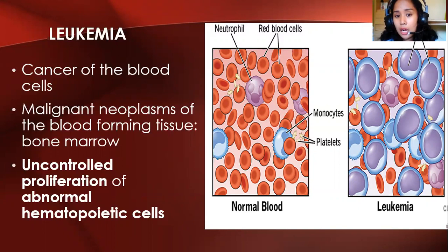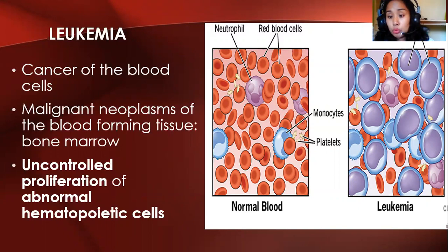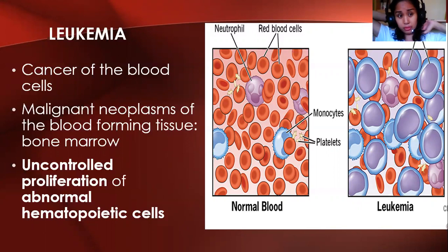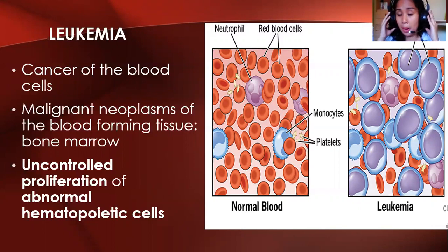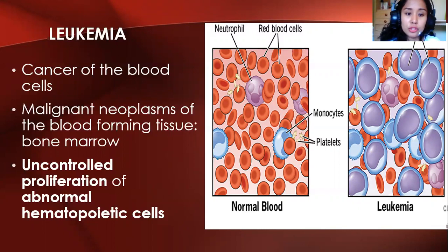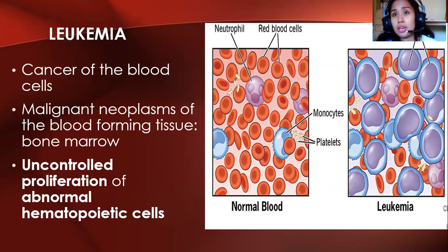If we break down the word 'leukemia' — 'leuko' refers to white blood cells and 'emia' points to blood. But it's actually a misnomer, because it's not only white blood cells that are abnormal. All hematopoietic cells can be affected. We have two types of leukemia: myeloid leukemia and lymphoid leukemia, depending on the cell line affected.